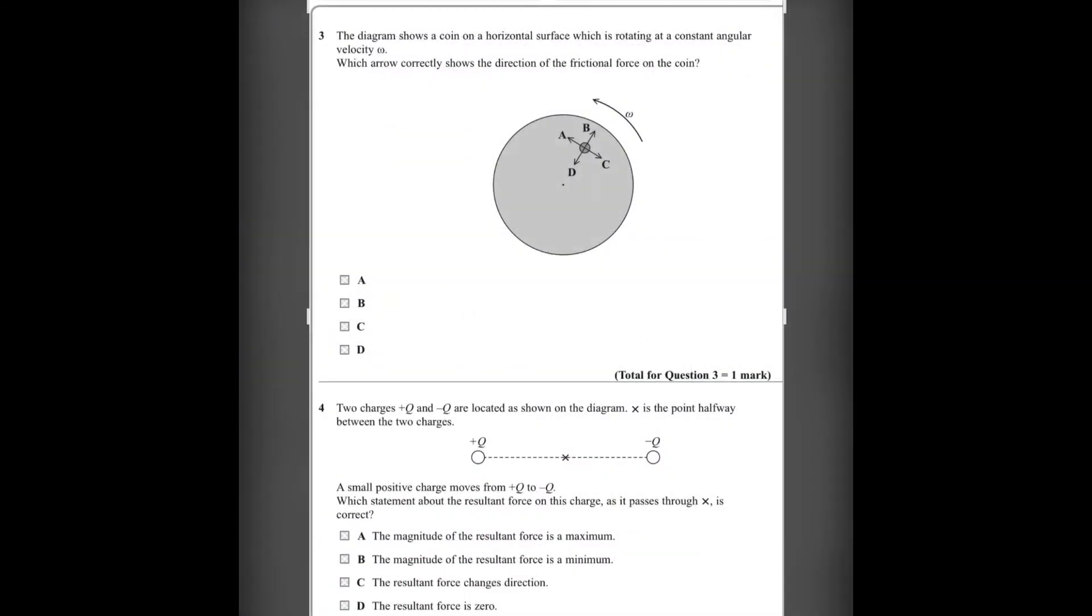Number 3. The diagram shows a coin on a horizontal surface which is rotating at a constant angular velocity omega. Which arrow correctly shows the direction of the frictional force on the coin? The direction of the frictional force will be D since it is pointing towards the center of motion. The direction of the centripetal force of the motion will be the same as the frictional force. So the answer will be D.